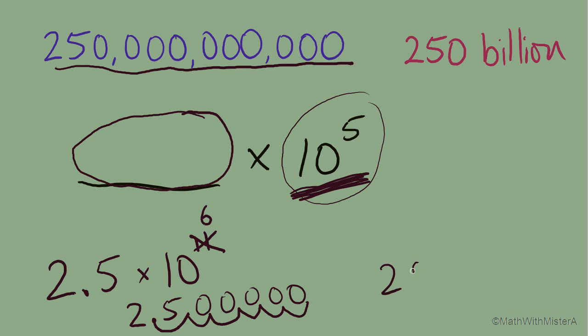So we've got 2, 5 with 5 zeros. And you also might have noticed that we know 10 to the sixth power is million, 2.5 million. So 2,500,000.